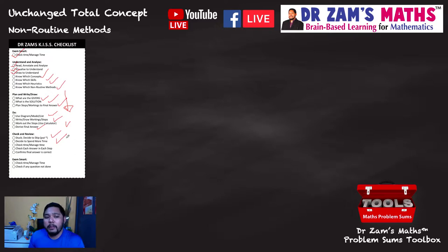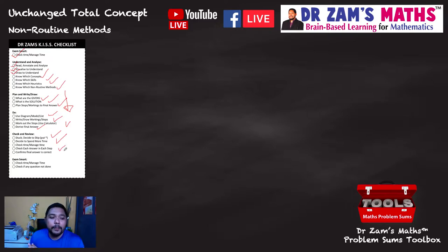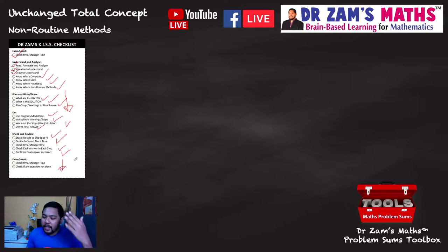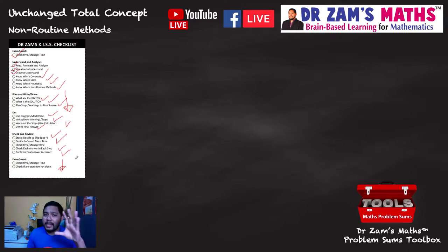For different questions there are different ways of checking. If you decide to skip a question, put a circle or mark and decide whether to spend more time on it. Check every step to ensure all numbers tally. Confirm the final answer is correct by substituting back into the question. Manage time and go through questions not done. This is Dr. Zam's KISS checklist — a math mental routine so that when you face a problem, this is how you think.